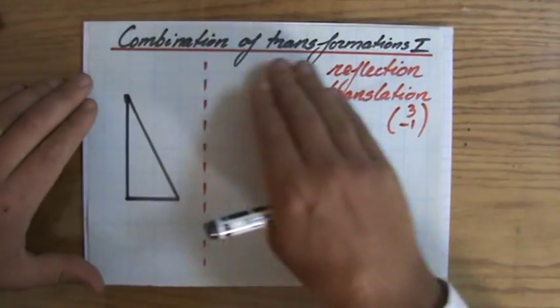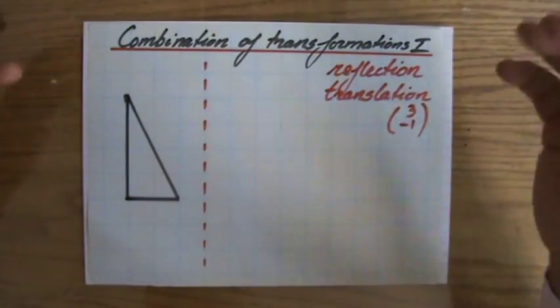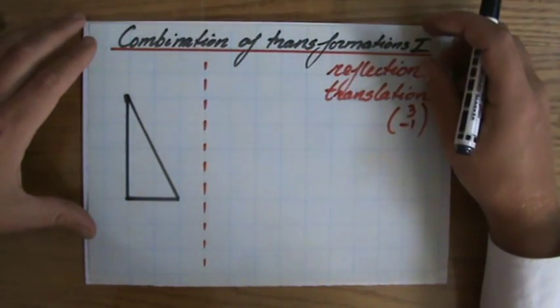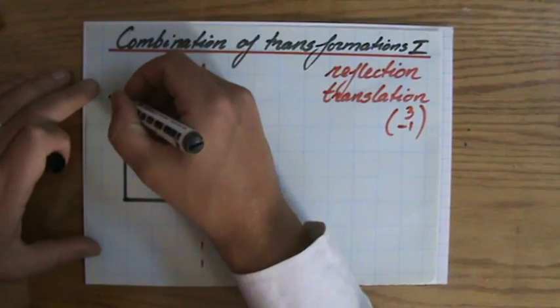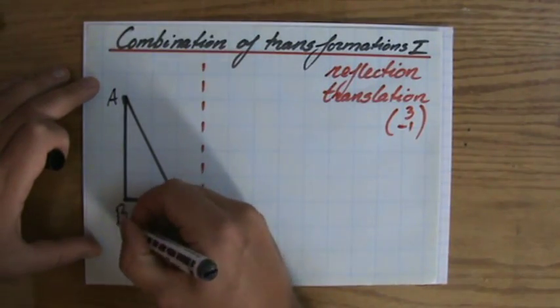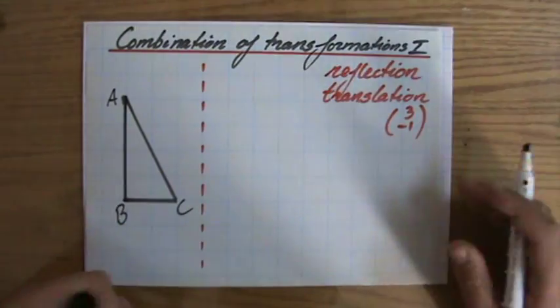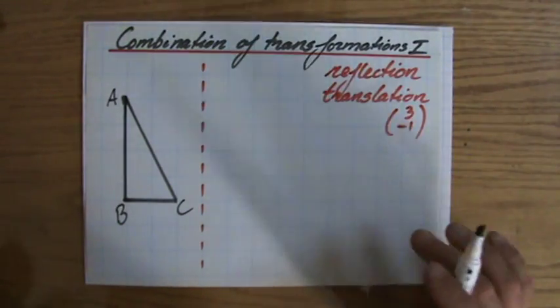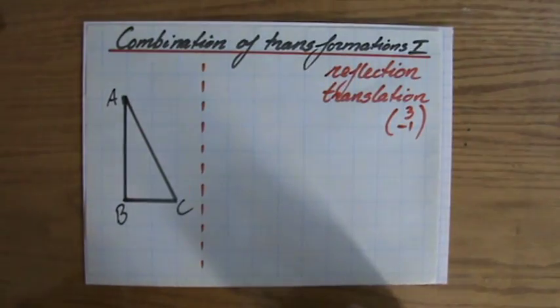Now, combinations of transformations is exactly what it says, a combination of those four types of transformations. So for instance, they tell me, well, you have triangle ABC, and you have to reflect it in the mirror line, and then translate it under the vector 3 minus 1. So that's a combination of two transformations, a reflection and then a translation.